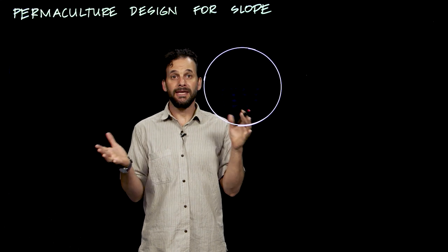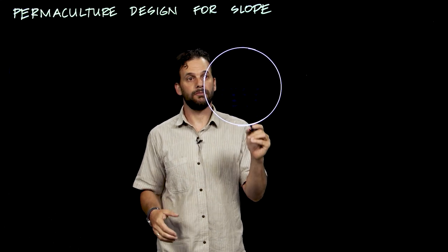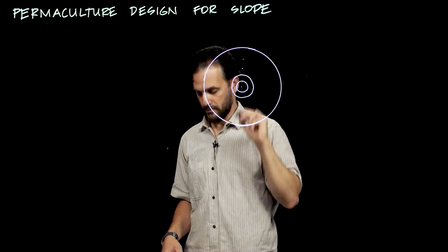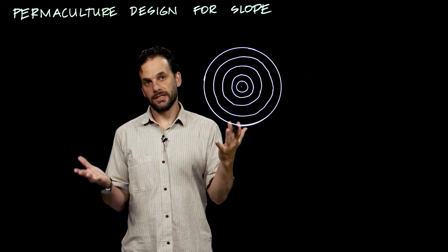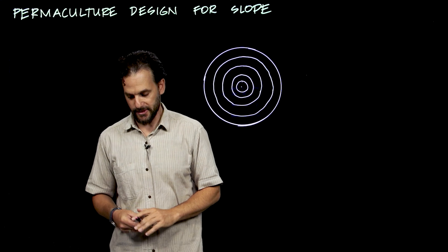The zones being a concentric circle pattern, and the sectors expressed as pie wedges on the sector compass.